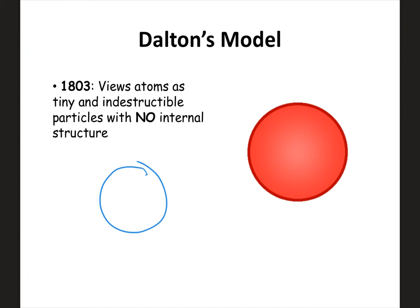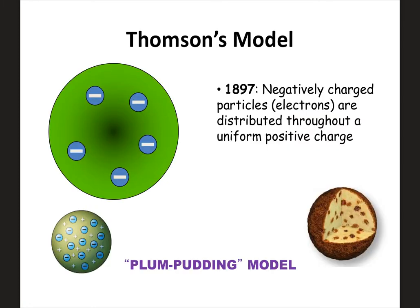You should have a basic understanding of each of the models and what they would look like. Dalton's is the easiest. But as experiments were performed and discoveries made over time, we had to change our model of the atom.